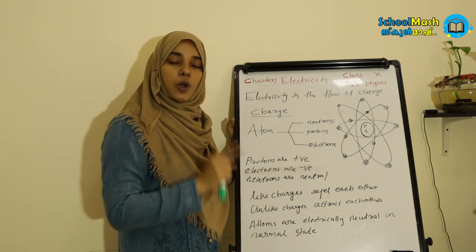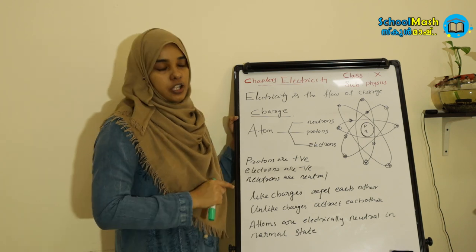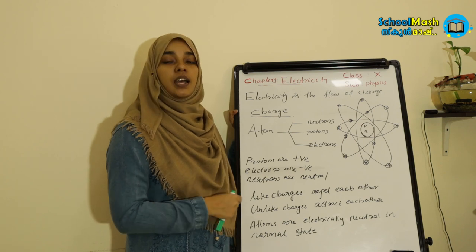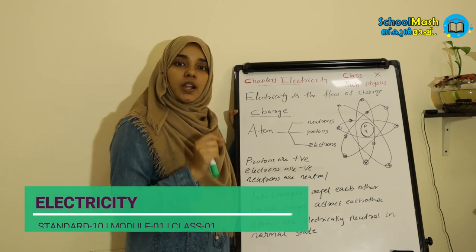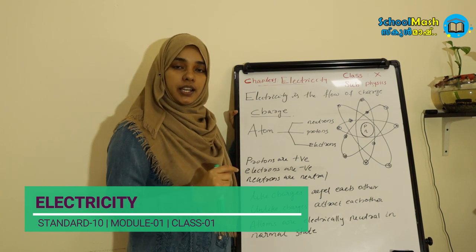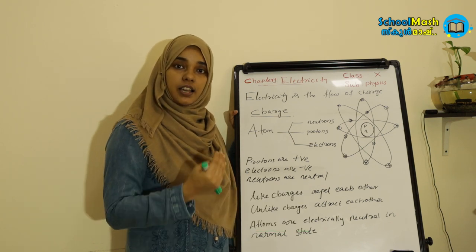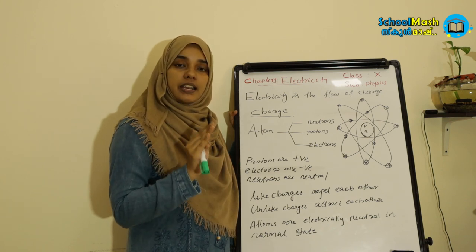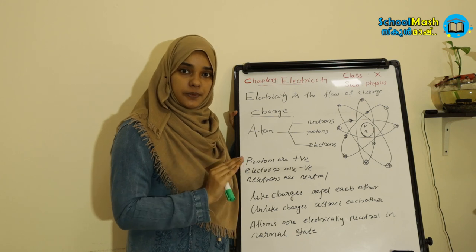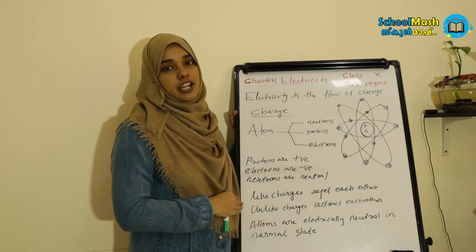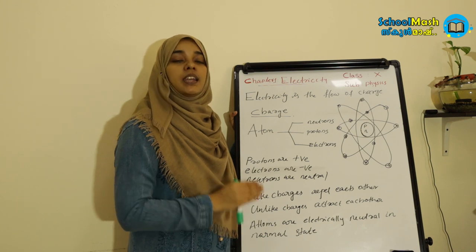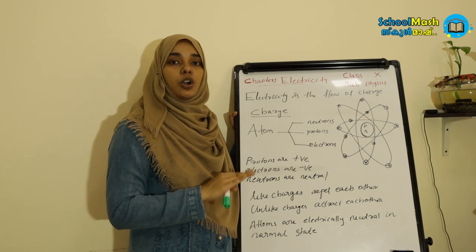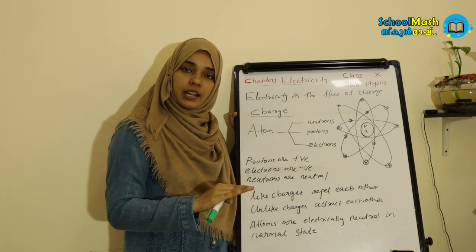What is the difference between protons and electrons? For example, if we consider carbon, carbon has atomic number 6. So carbon has 6 protons in the nucleus. Electrons are negatively charged. In a normal state, an atom is electrically stable because the negative charges and positive charges are equal.